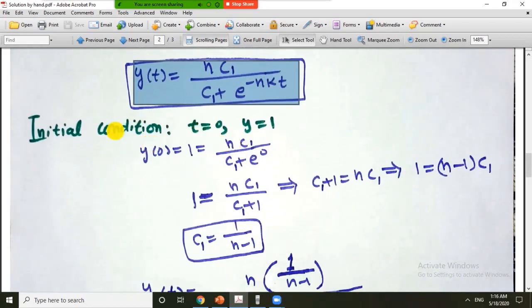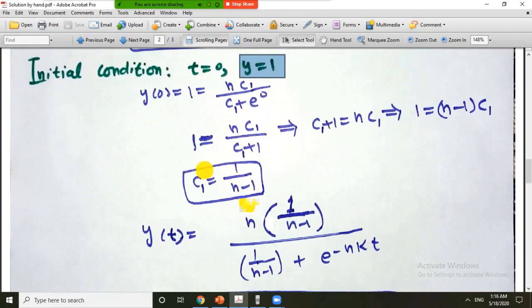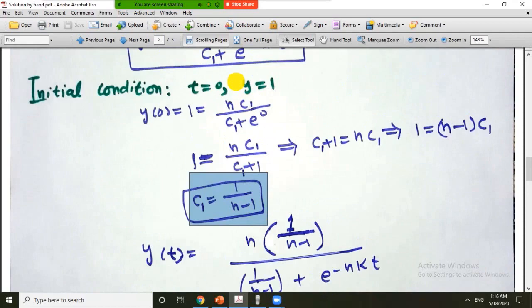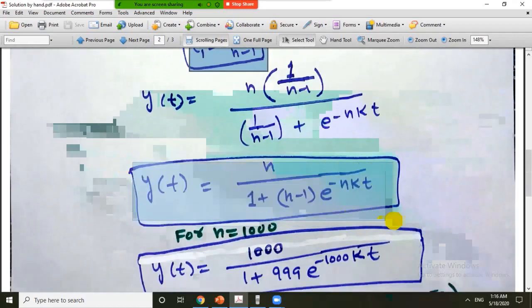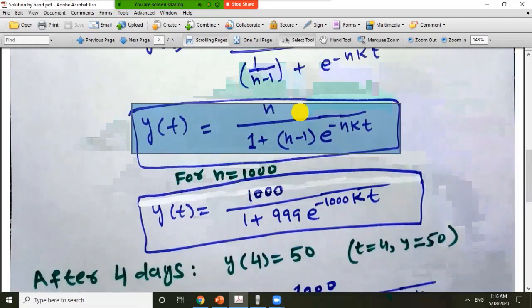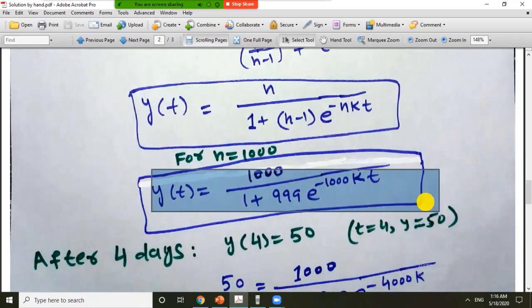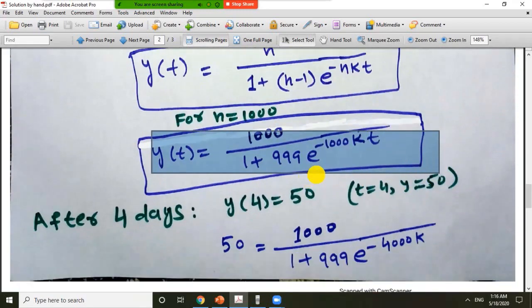By applying the initial conditions that initially there was only one student carrying a flu virus, we can put t is equal to 0, y is equal to 1 and the value of c is 1 over n minus 1. Putting this value in the general solution and simplifying we have this as a solution to the initial value problem. By putting n is equal to 1000 this is the complete particular solution to the given initial value problem.